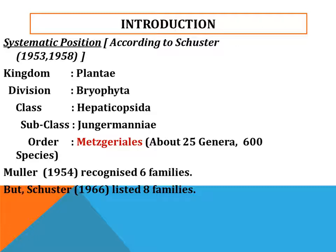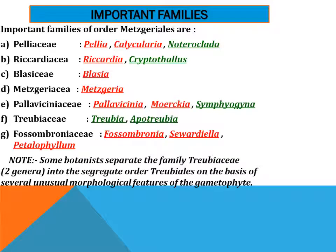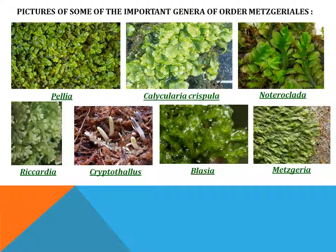Botanist Mueller in 1954 recognized six families, but Schuster in 1966 listed eight families. The important families of this order are Pelliaceae, Riccardiaceae, and so on. Some botanists separate the family Treubiaceae, which has two genera, into the segregate order Treubiales on the basis of several unusual morphological features of the gametophyte.